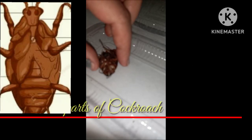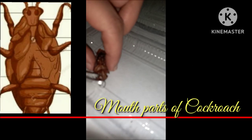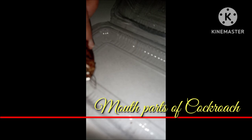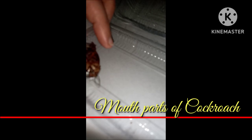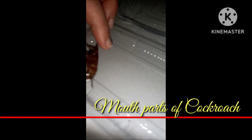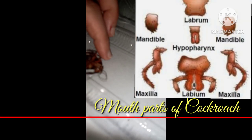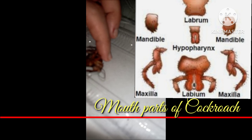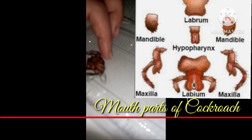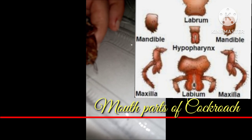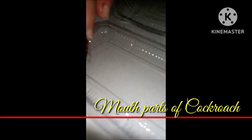Viewed ventrally, the head part has an opening known as the mouth. Around the mouth there are parts called mouthparts. There are totally five parts of the mouth: labium, labrum, mandible, maxilla, and hypopharynx. They are used to help the cockroach in biting and chewing food.